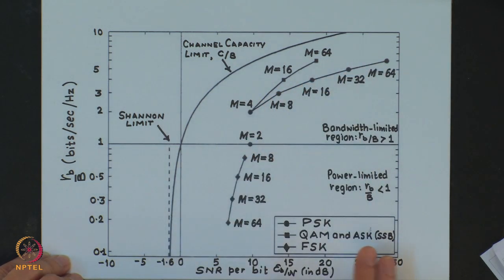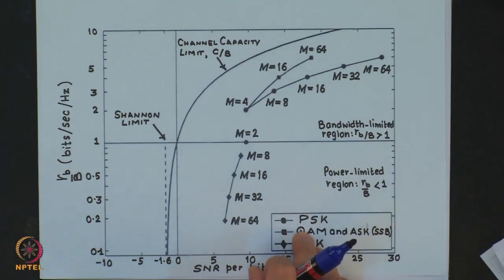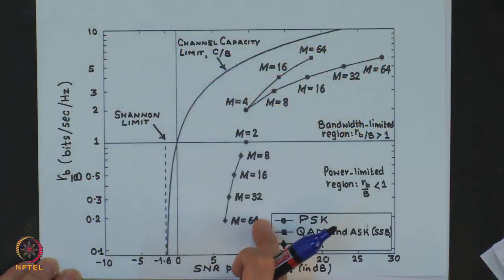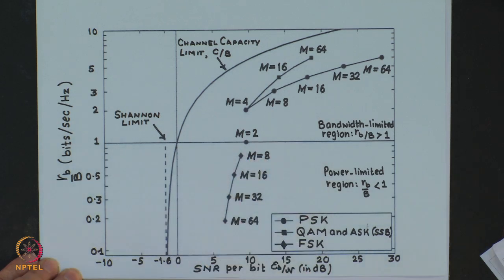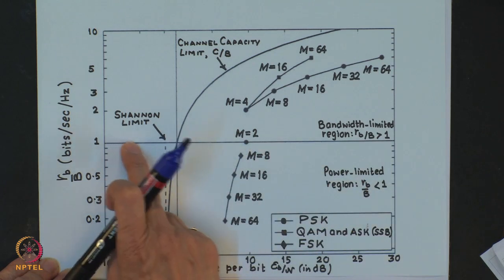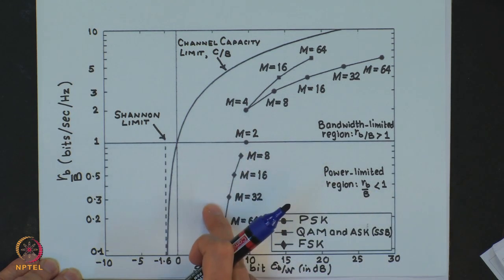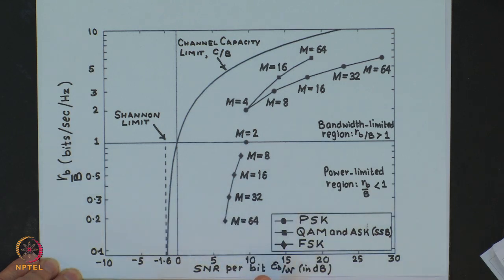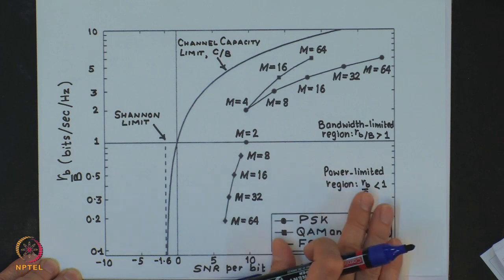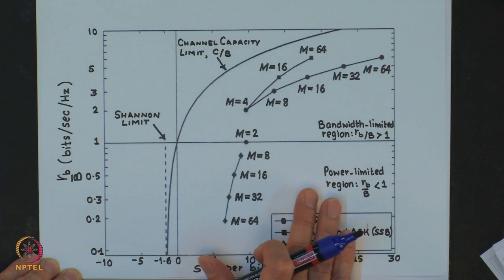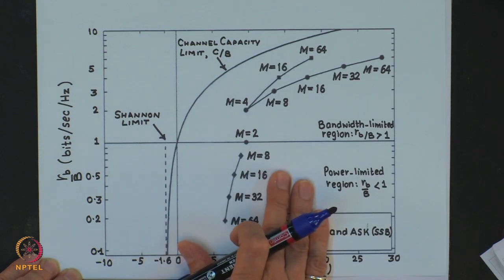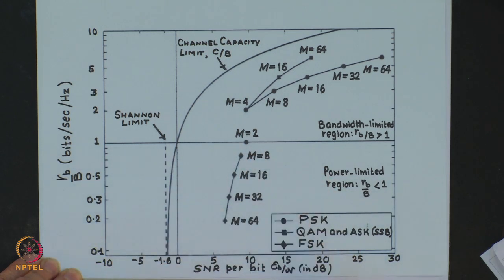Telephone channels and digital microwave channels are examples of such bandwidth-limited channels. In contrast, M-ary FSK modulation provides a bit rate to bandwidth ratio less than 1. As M increases, Rb/B decreases due to the larger increase in required channel bandwidth. However, the SNR per bit required to achieve a given error probability of 10⁻⁵ decreases as M increases. Therefore, M-ary FSK is appropriate for power-limited channels that have sufficiently large bandwidth to accommodate a large number of signals but cannot afford a large SNR per bit.